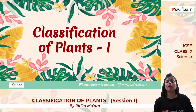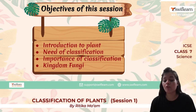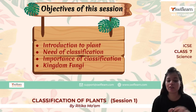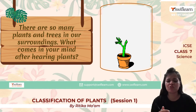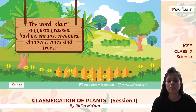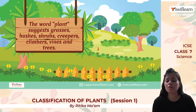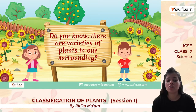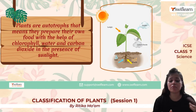Today we are going to do classification of plants. We'll have a quick introduction on plants, see what is the need and importance of classification, and focus on kingdom fungi. If I talk about our surroundings, there are many trees and plants. When we think about plants, we have grasses, trees, shrubs, creepers, climbers, herbs, bushes, vines, etc. These are different types of plants classified by their variety.